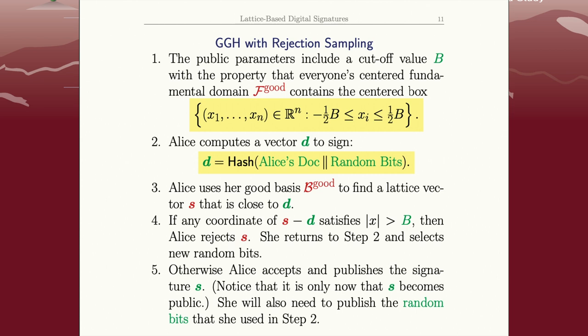If any coordinate of S minus D is too big, she rejects it, goes back to step 2, chooses a different random bit string, tries it again. So this loop 2 to 4 could go on quite a while, but eventually hopefully she finds one that works. And then she publishes that S, and it's only at this stage that Bob and Eve and everyone else gets to see S. So they don't get to see any of the signatures that Alice doesn't like.